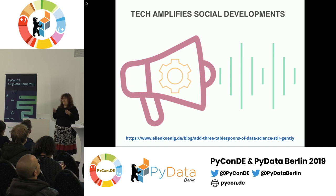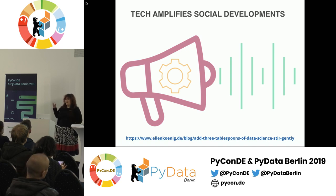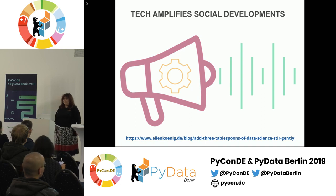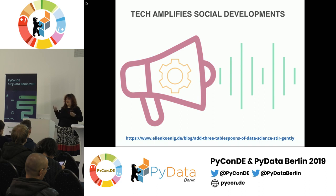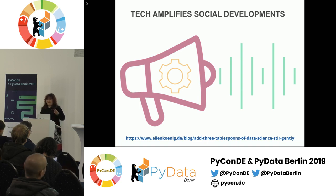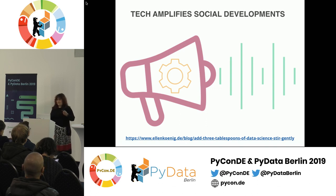What technology really does is it amplifies social development. If we have a positive social development, like increasing literacy rate, technology can help us get there faster. But also on the negative side, things like data privacy issues or growing social inequality also get made worse by technology. That's really important to keep in mind when we think about how we, as data scientists, can contribute to social good.